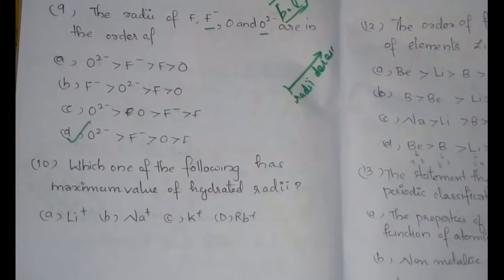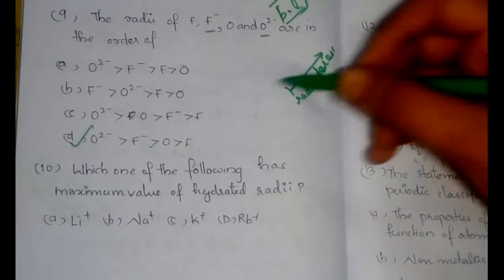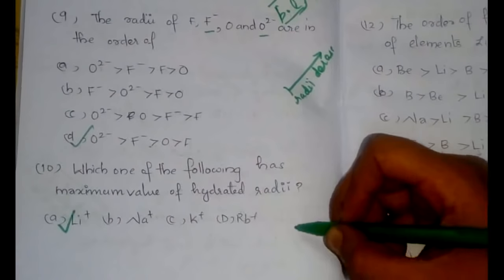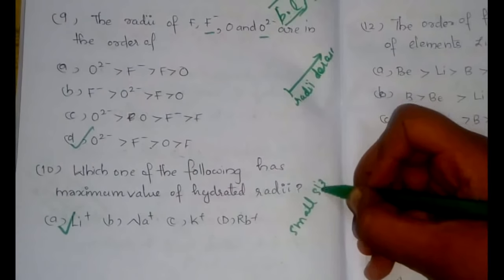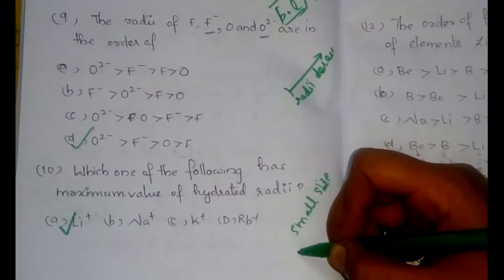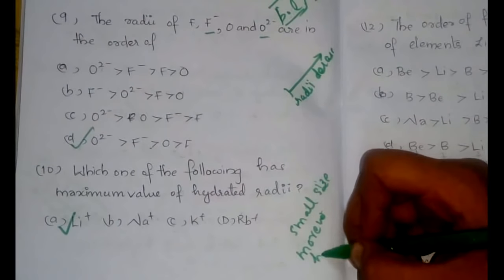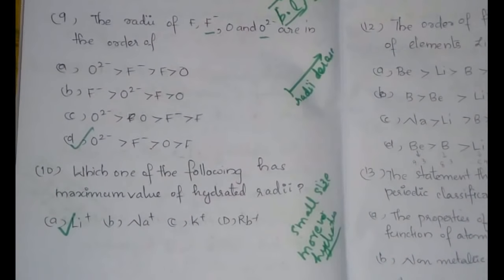The tenth question: which one of the following has the maximum value of hydrated radii? The answer is Li+. It is because smaller the size, the more would be hydration, and therefore more hydrated radii. So Li+ is the answer.